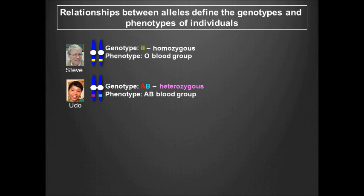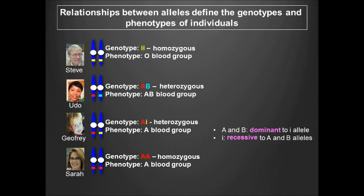Notice that although a gene can have multiple alleles, any one normal individual can only have two alleles of the gene. An allele like the A allele, whose phenotype is expressed with just one copy of the allele, is a dominant allele. In contrast, an allele whose phenotype is masked when present as a single copy in a heterozygous individual is a recessive allele. Therefore, recessive alleles like the i allele only manifest their phenotypes when present in two copies in homozygous individuals.